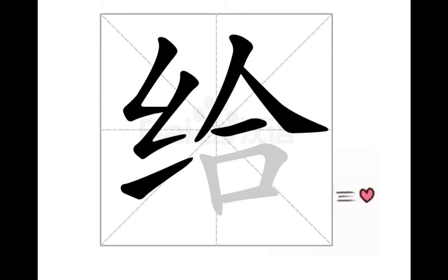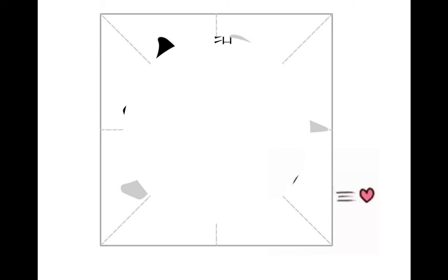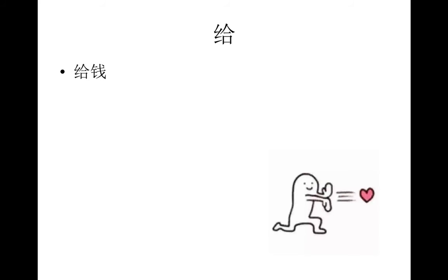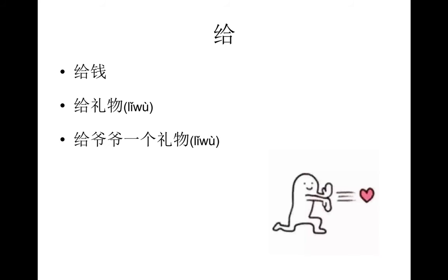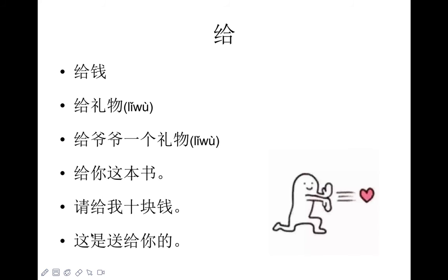我们来看这个字是什么？对了，给。给的偏旁是什么？口。对了。给什么？给钱。还有，给礼物。送给我礼物。给爷爷一个礼物，也可以说送给爷爷一个礼物。还有呢，给你这本书，请给我十块钱。这是送给你的。他给什么？对，给心。所以给你小猩猩，给心。